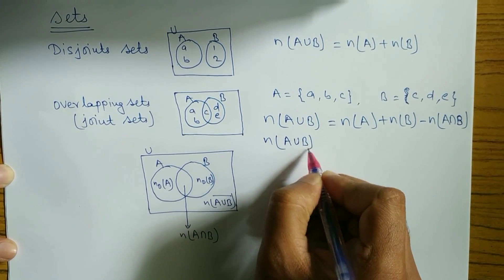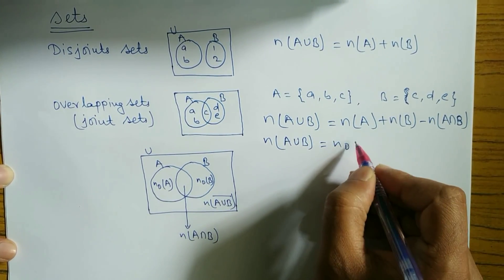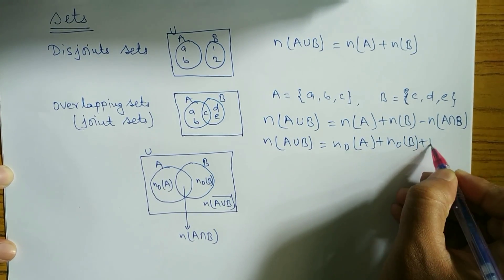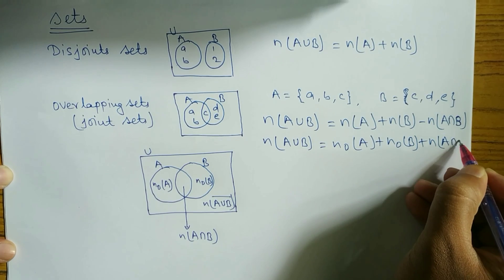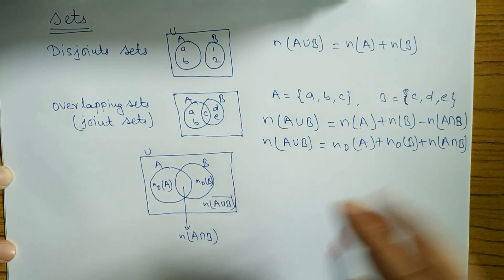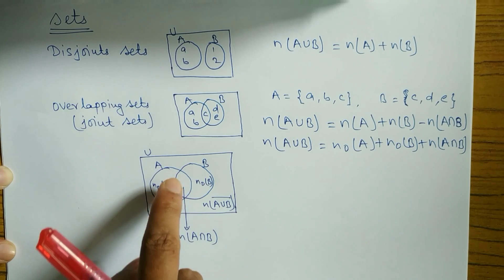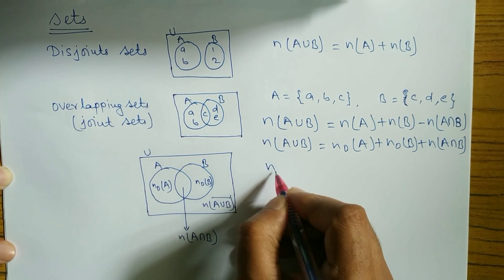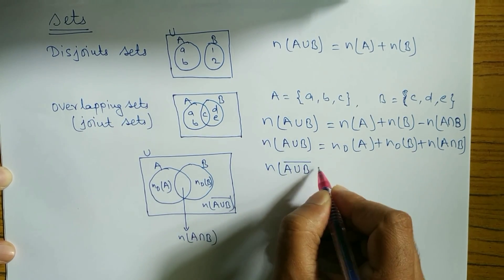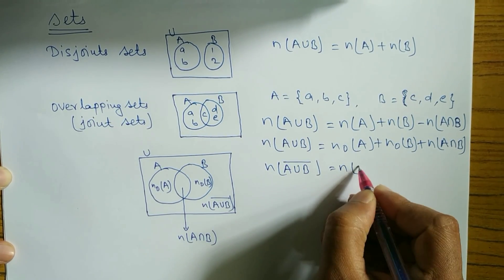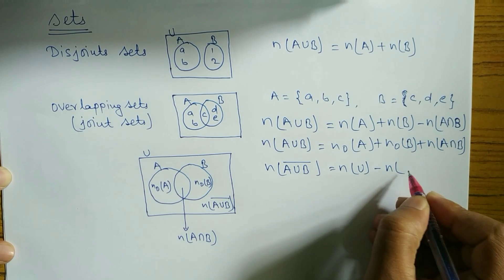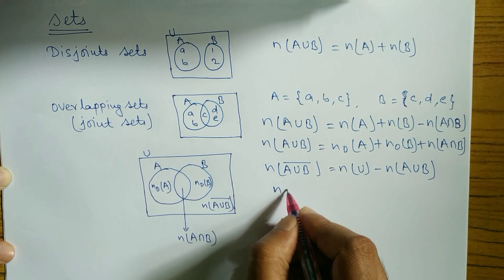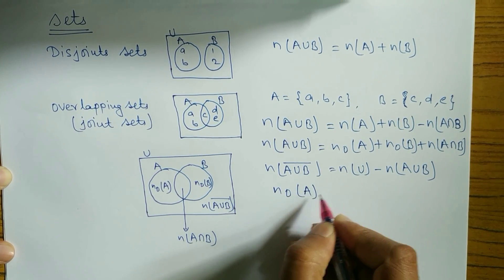Another formula for n(A∪B): n(A∪B) = n(only A) + n(only B) + n(A∩B). When you use 'only', you add only A, only B, and the middle intersection. The formula for n(A∪B) complement is n(U) − n(A∪B).